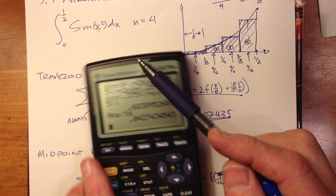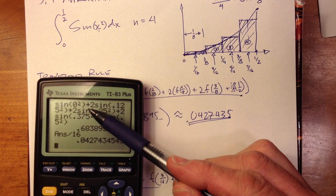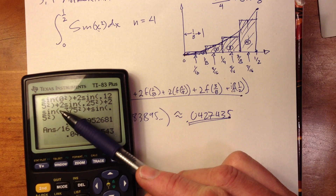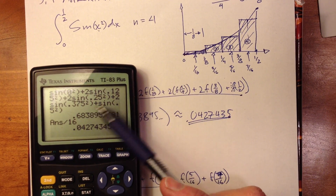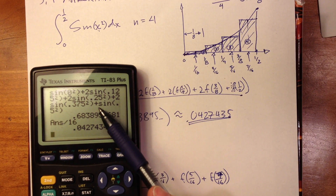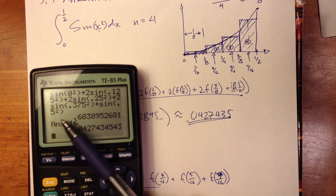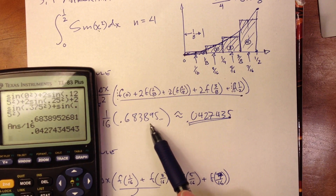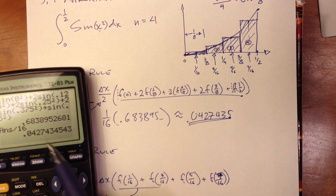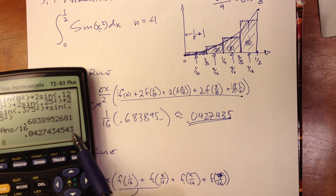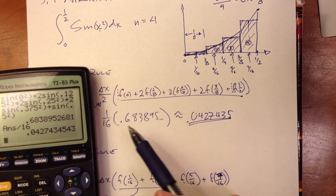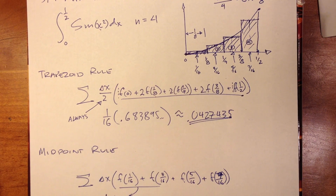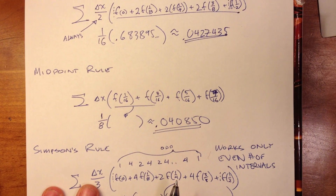I computed sine of zero squared, plus two times sine of one-eighth (0.125) squared, and so on — making sure to include the coefficient of two where needed, and an implicit coefficient of one for 0.5 squared at the end. Adding those up gives 0.683895, then multiplying by one sixteenth gives an approximation of approximately 0.0427 for the area under this curve.